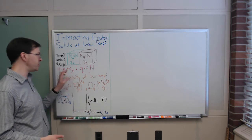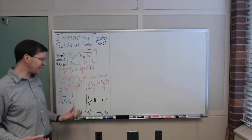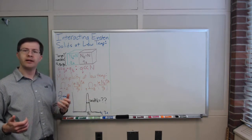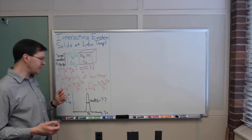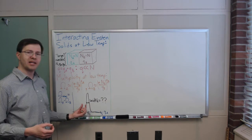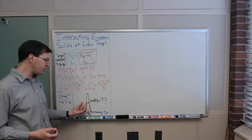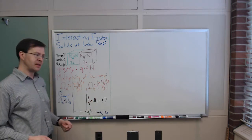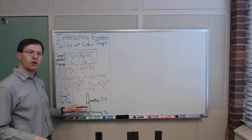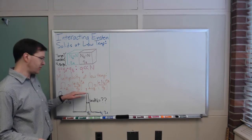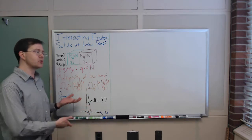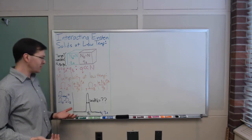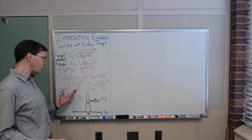Our intuition says there will be a peak around Q_A = Q/2, half the energy in each solid. We could prove that's the peak by taking derivatives, but what I really want to understand is the width of that peak. By width, I mean the distance between the two sides when you go down to 1/e of the maximum value.